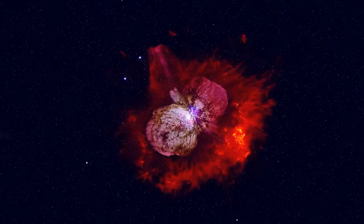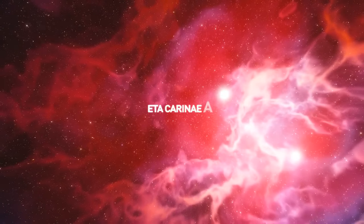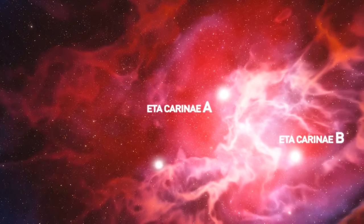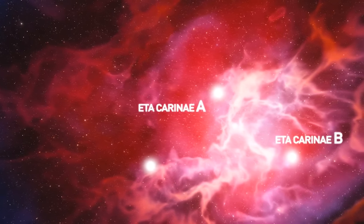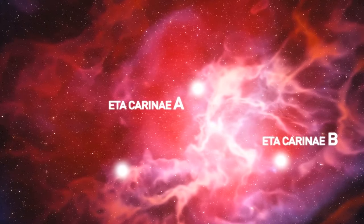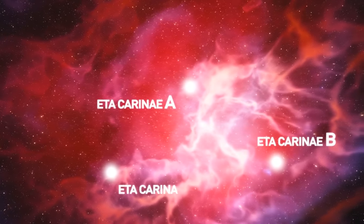Eta Karina is really two stars, Eta Karina A and Eta Karina B. There's a third star nearby that's also interacting with the double star's dynamics. Now, without looking, I'm guessing it's named Eta Karina C. Good guess.